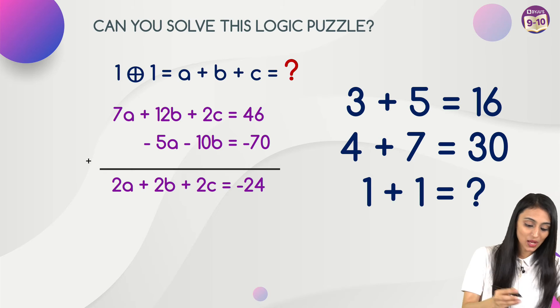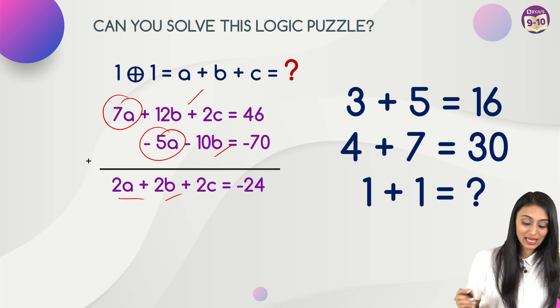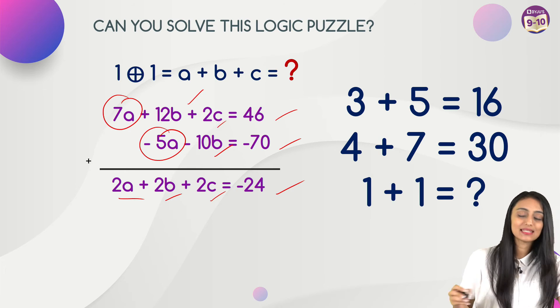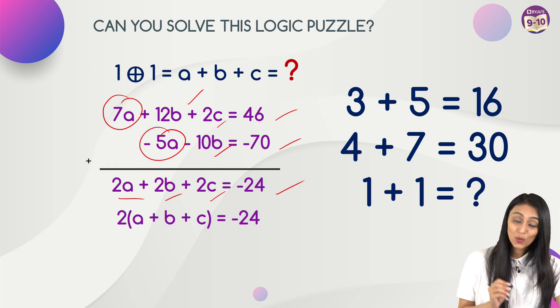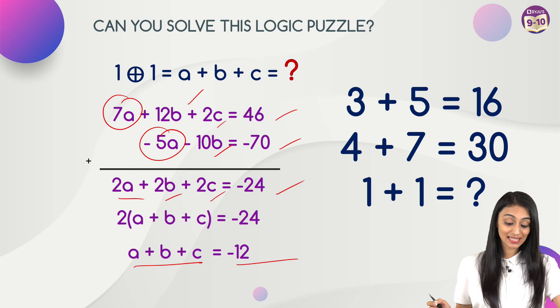Now I have these two equations. So let's add them up. We get 7a minus 5a, that's 2a. 12b minus 10b, that's 2b. 2c as it is, plus 2c. 46 minus 70 is minus 24. If I take two common from the left side, this 2 and 24 will get cancelled out. We have a plus b plus c equals minus 12.